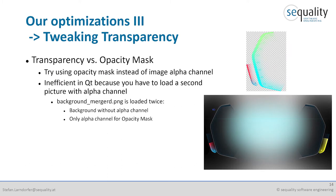We also optimized transparency by using opacity masks instead of image alpha channels in some cases, achieving the same visual appearance with better performance. While there are some limitations in how opacity masks can be configured, reviewing and replacing transparencies with opacity masks further improved GPU performance overall.